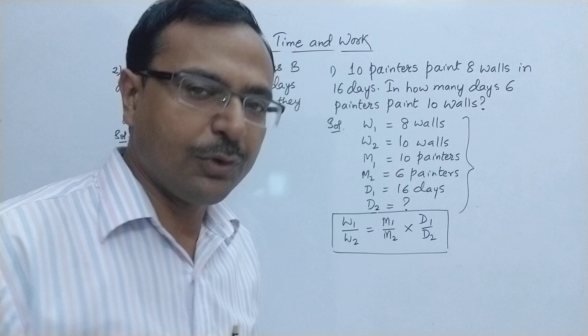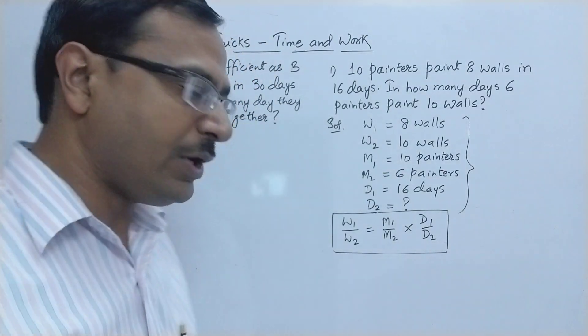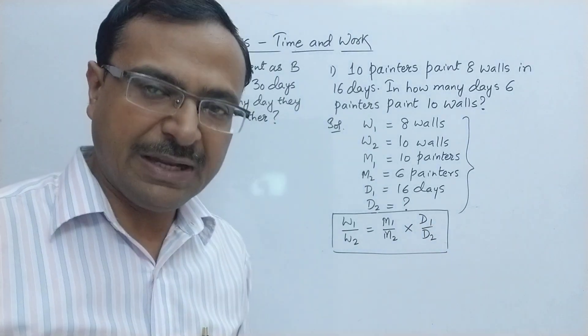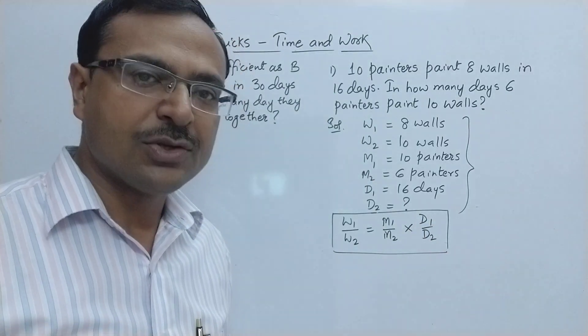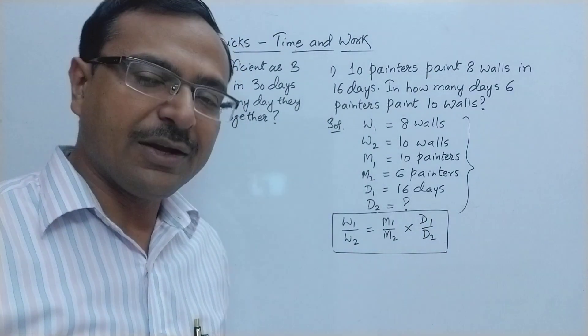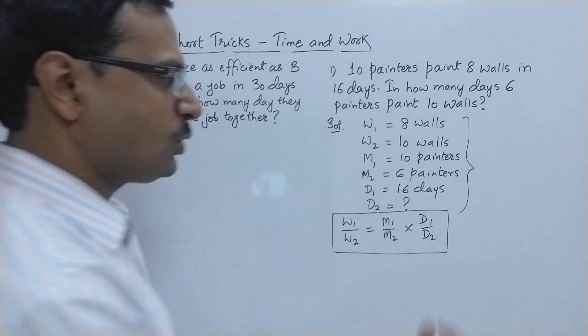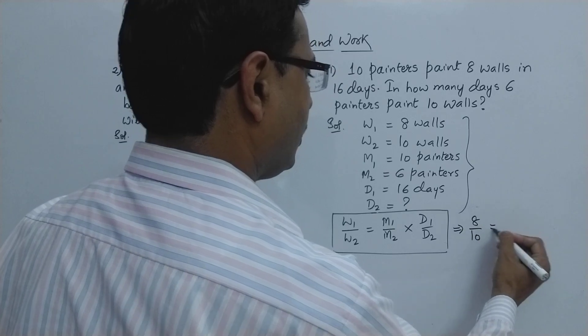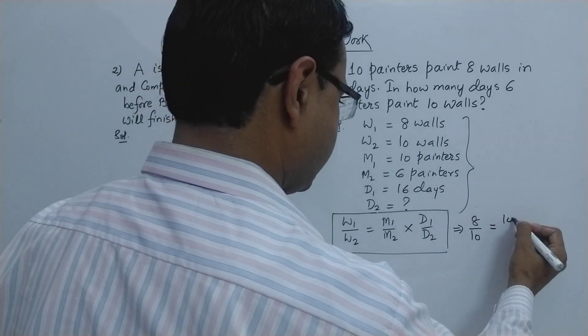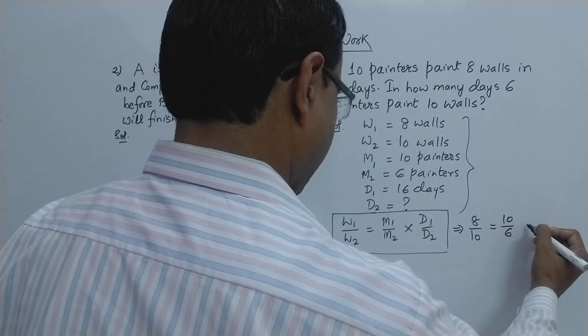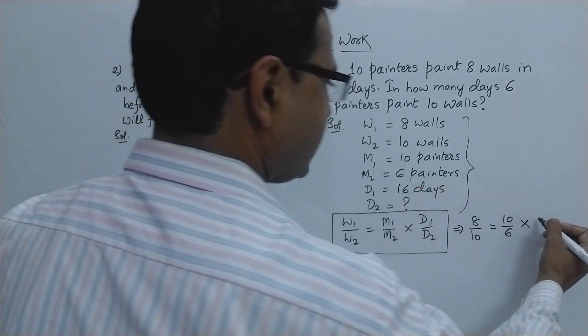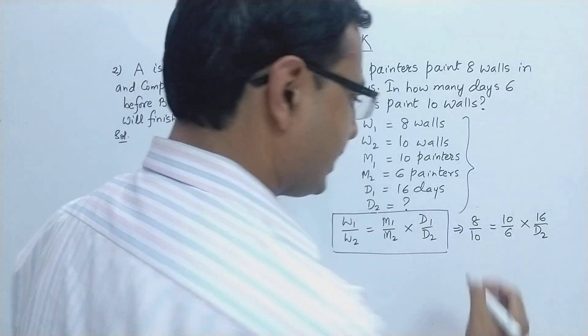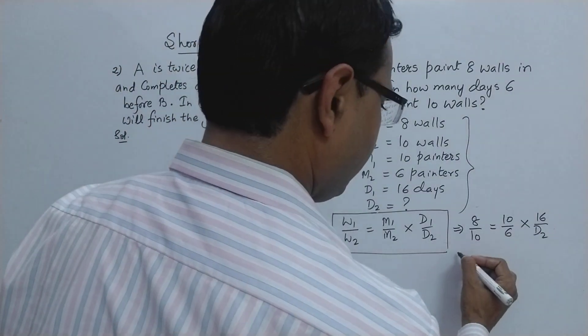W1 upon W2 equal to M1 upon M2 into D1 upon D2, so D2 is to be found out and the remaining five variables are already known, so now things will get very simple for you. Let's substitute the values here: 8 upon 10 equal to 10 upon 6, and here multiply by 16 upon D2, so this is to be solved to get to the answer.